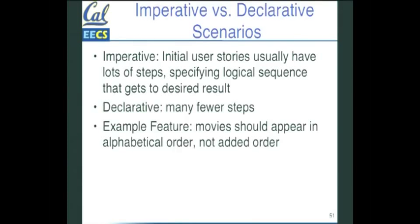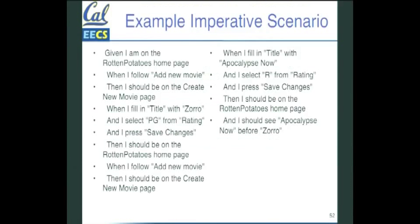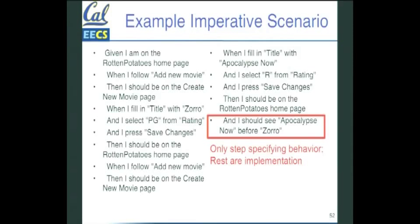The better way is a more declarative notation. So let's look at two examples of adding movies. We want to add movies and make sure they remain in sorted order, so 'Apocalypse Now' should be before 'Zero.' But to make this user story and scenario work, the only thing that actually specifies the behavior is 'I should see Apocalypse before Zero.' All the other steps were just to set up state so we can say this. It seems pretty tedious, error-prone, and hard to see what's going on.